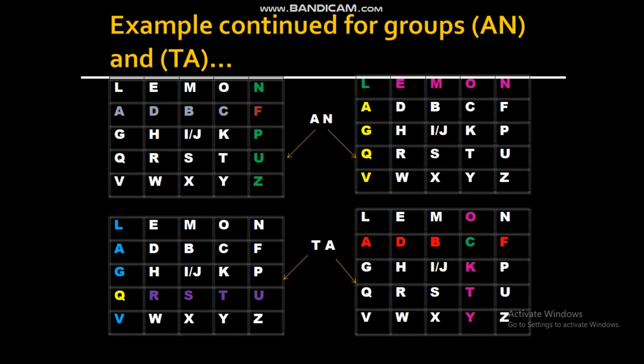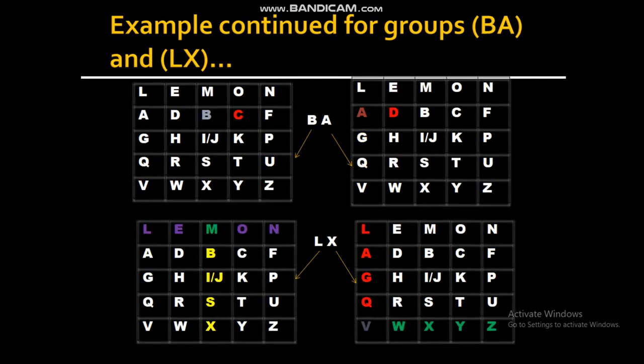Similarly for TA, T gets encrypted to Q and A gets encrypted to C. Now for group BA, since B and A belong to the same row, this is an exceptional case. In such a case, to encrypt B, look for the right successor of B, which is C. And to encrypt A, look for A's right successor, which is D. So B gets encrypted to C and A gets encrypted to D. In group LX, for L, examine L's row and X's column — so L gets encrypted to M. For X, look at X's row and L's column — so X gets encrypted to V.